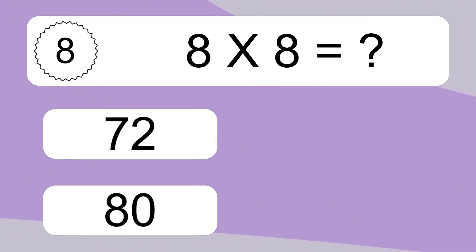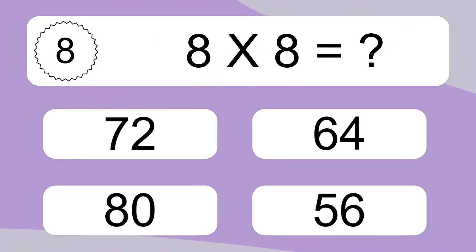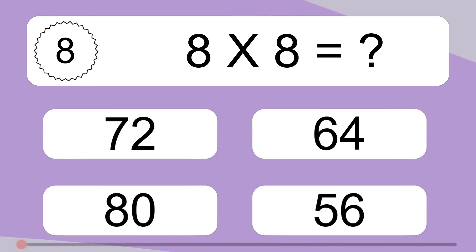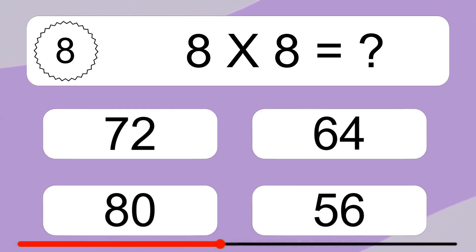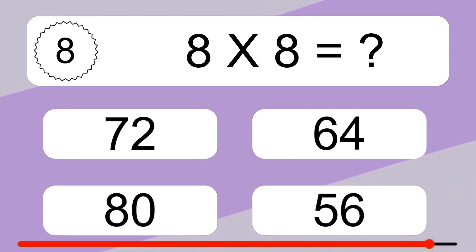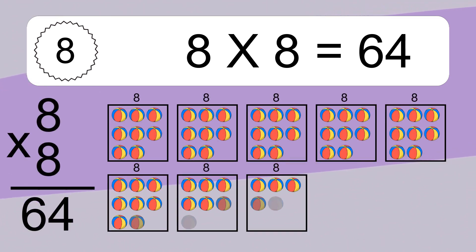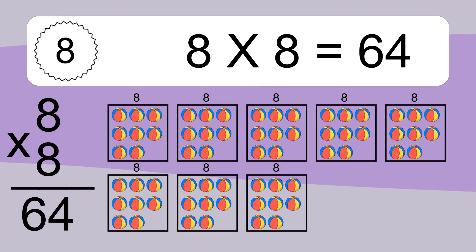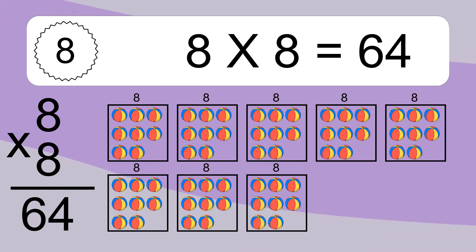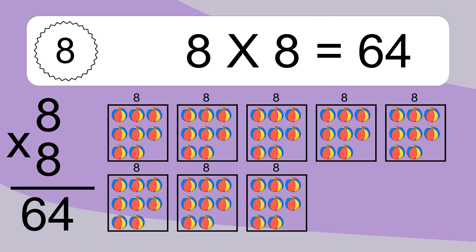8 times 8 equals what? 8 times 8 equals 64. We have 8 boxes and each box has 8 colorful balls inside. If you count all the balls in all the boxes together, you will have 8 times 8 balls. This equals 64 balls.